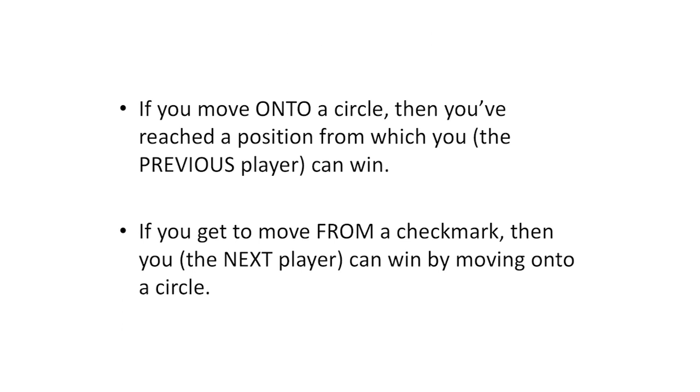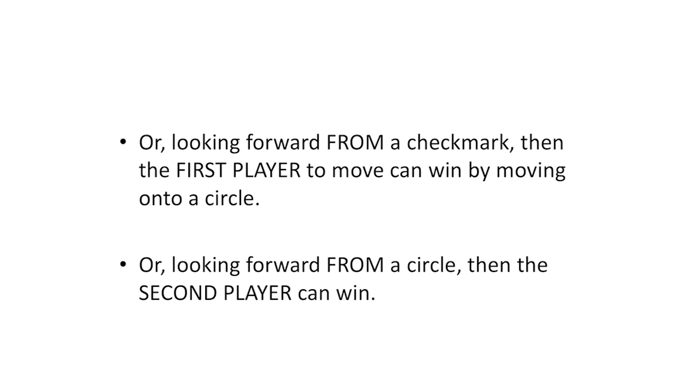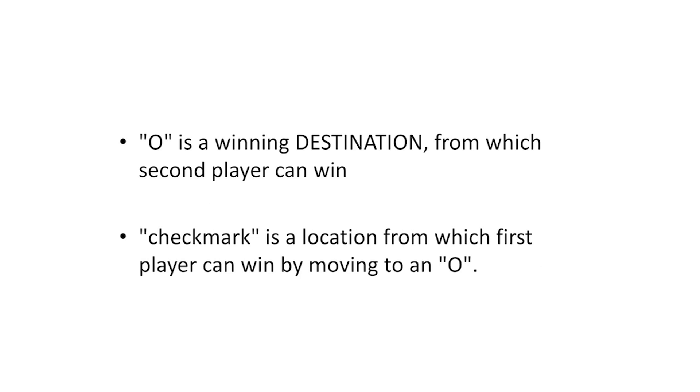If you move onto a circle, then you can win. Or if you get to move from a check mark, then you can win by moving onto a circle. From a check mark, the first player can win. But from a circle, the second player can win. A circle is a winning destination, but a losing starting location. A check mark is a winning starting location, but a losing destination.